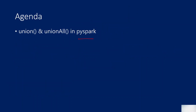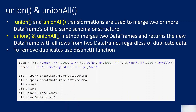In SQL we have union and union all functions. Union will get you the union of two tables. Let's assume you have two tables with the same schema like id, name, and salary. If you use union all it will get you all the rows; if you use union it will get you all the rows but it will remove the duplicates. This we know from SQL.